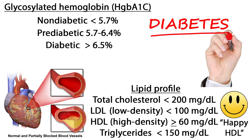A lipid profile is used to help predict a patient's risk of developing heart disease. The total cholesterol measures all of the cholesterol in the lipoprotein particles, and the desirable range is less than 200 mg per deciliter. The low-density lipoprotein, or LDL cholesterol, measures the cholesterol in LDL particles and is called the bad cholesterol because it is the main source of cholesterol buildup and blockage in the arteries, contributing to atherosclerosis.